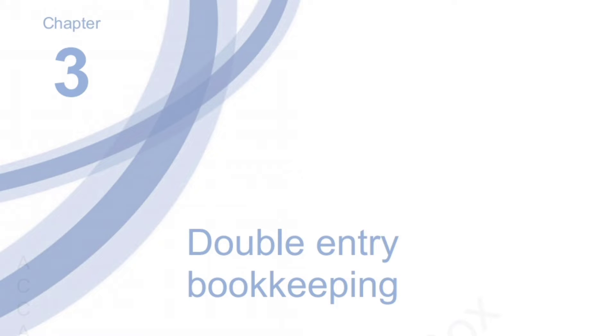Hello everyone, welcome back to ACC by Rida. Today we'll begin with Chapter 3 of the Kaplan F3 study text, which is Double Entry Bookkeeping. This is one of the most important chapters in accounting because it lays the foundation for everything else. In this session we'll focus on the first part of the chapter: business transactions and documentation — how transactions occur, their importance, and the key documents used in accounting.